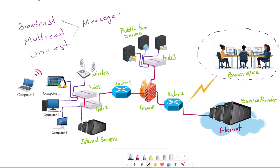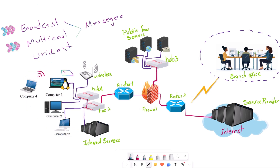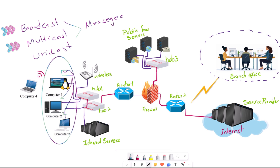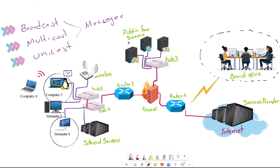Before closing this chapter, let's understand broadcast, multicast, and unicast messages. A broadcast message means one computer sends a message to reach all connected devices on the network. A multicast message means one device or computer sends a message to multiple computers on the same network. And unicast means one computer sends a message to another specific computer on the same network.